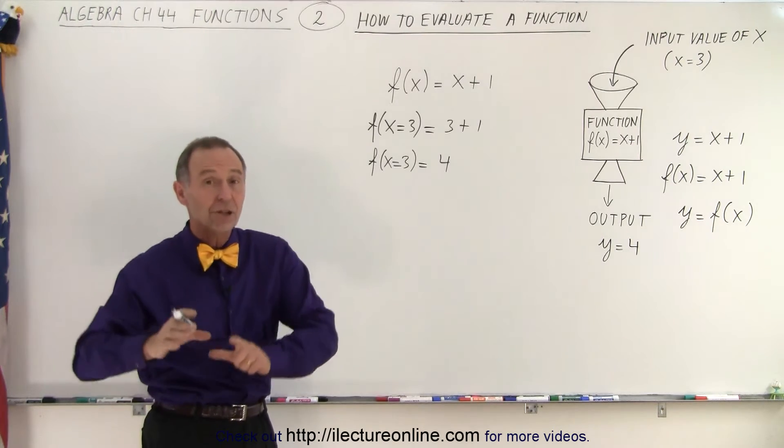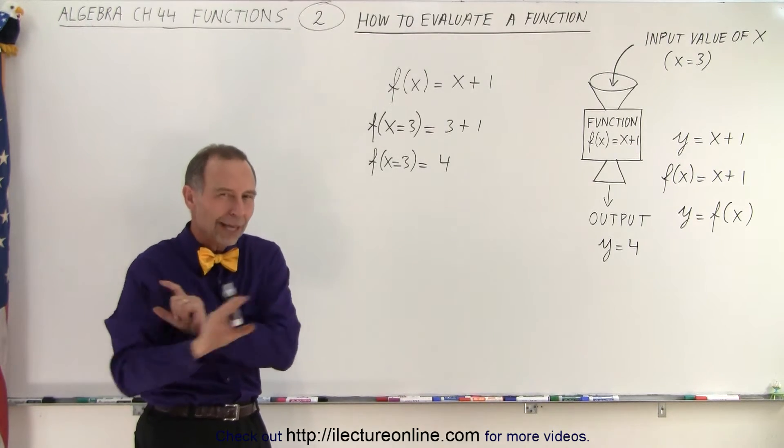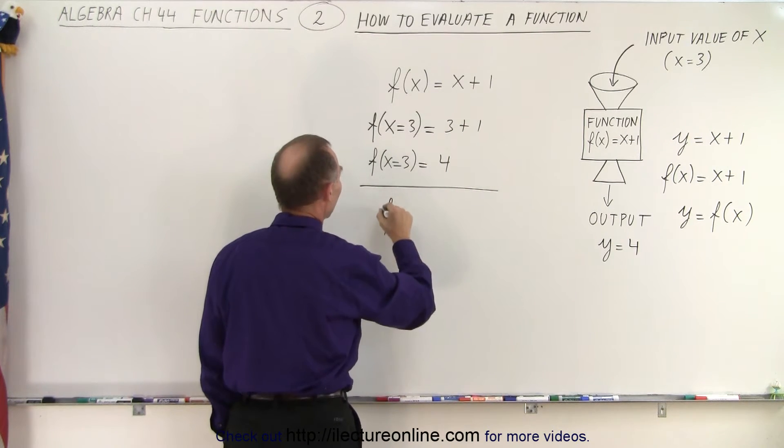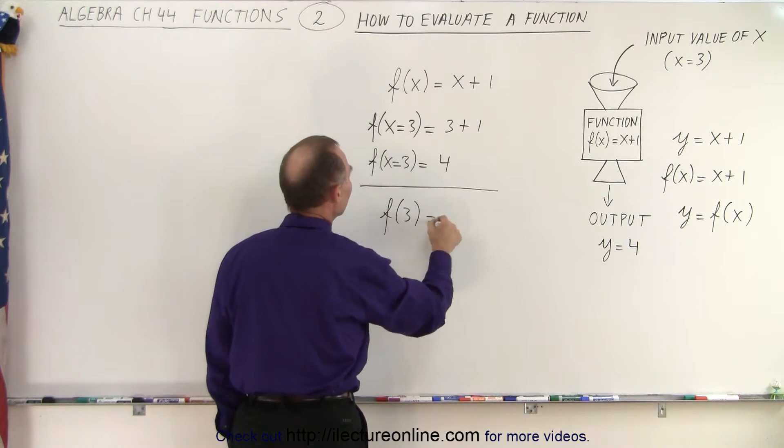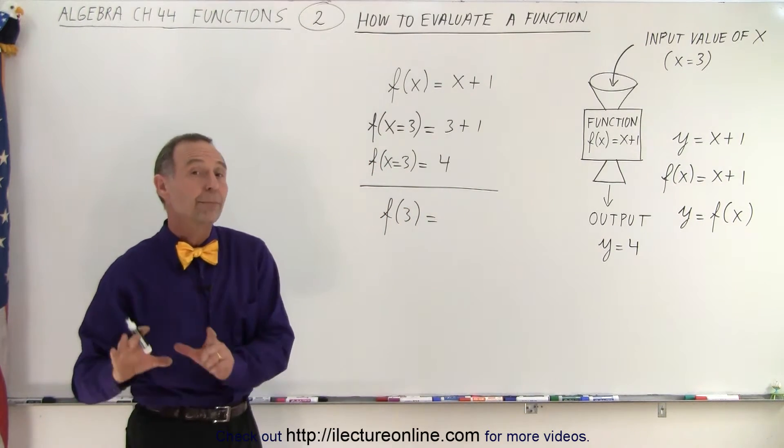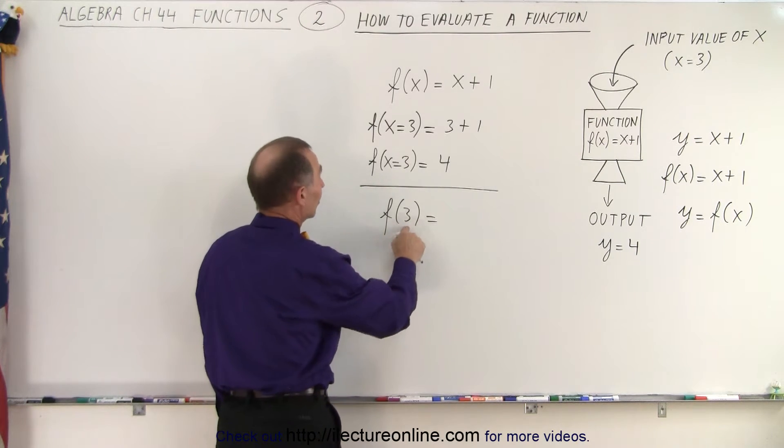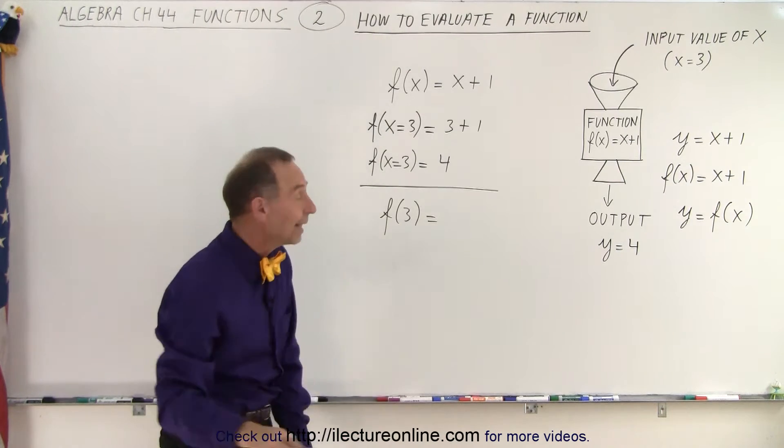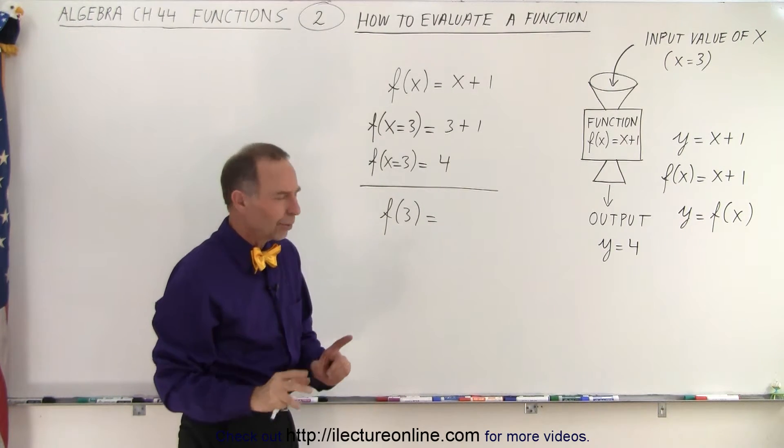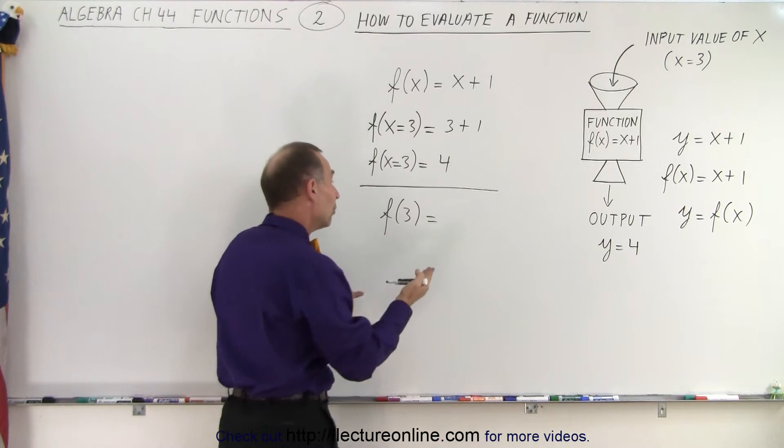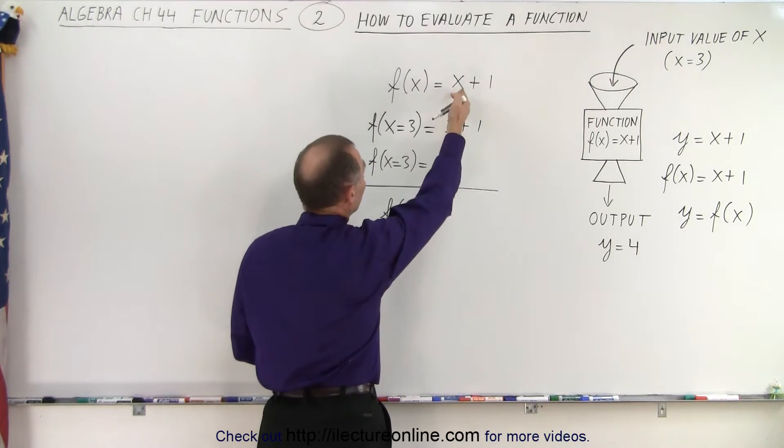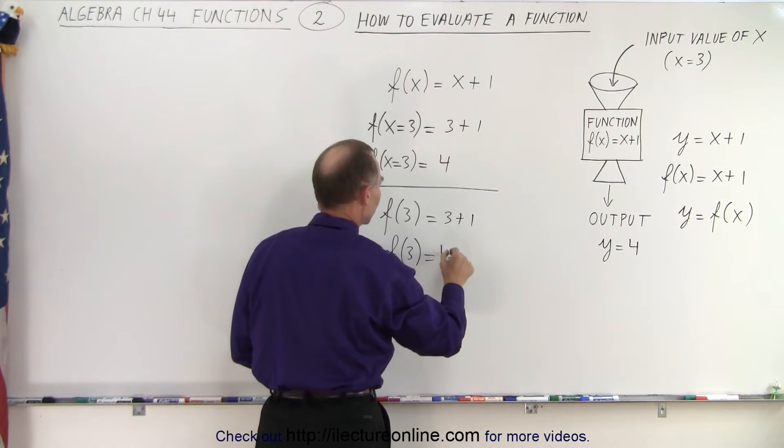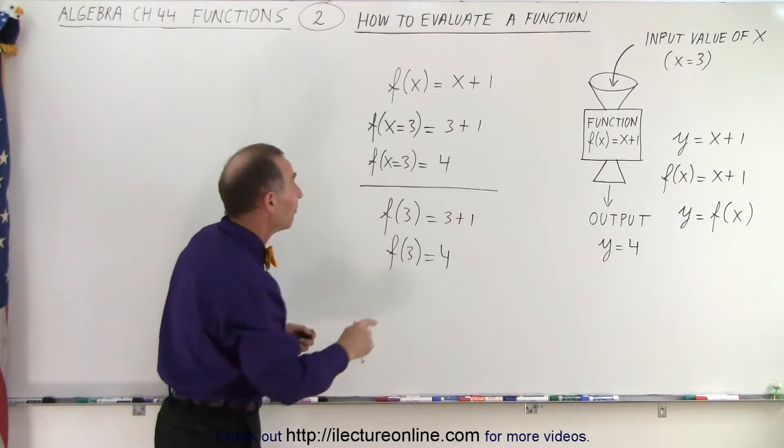Now, what you will see a lot as well, even in your textbook, which I don't like at all, is the following. They'll take the same function and then what they'll do is this: f(3) = ... Now, what this implies is that I really meant that x = 3 because it was f(x). So instead of x, I put in a 3. You should know that it's x = 3. But I don't like that at all because it's really confusing. But it is correct. So that means that I'm going to replace every x with a 3, so 3 + 1. And so we say that f(3) = 4.